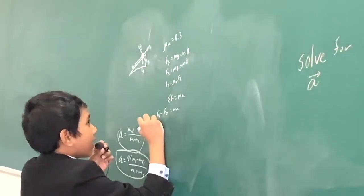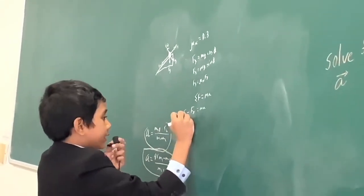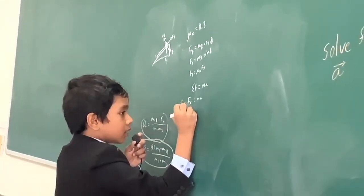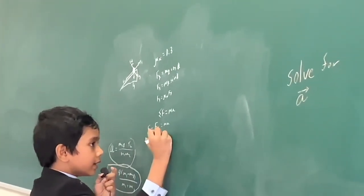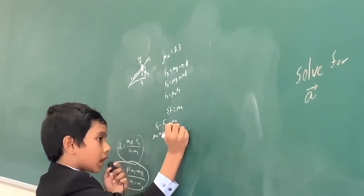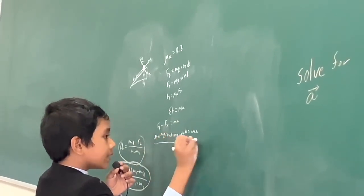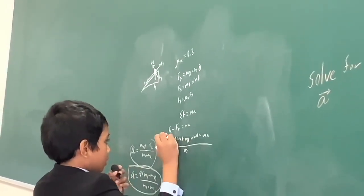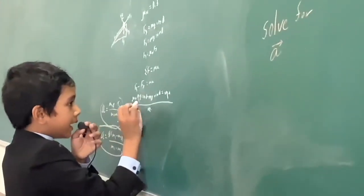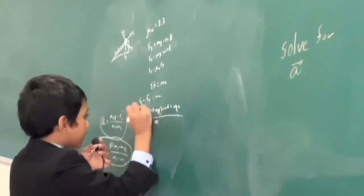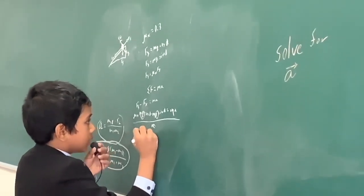Now, let's plug in. FF is mu K times FN. So, let's get that over here: mu K FN, and then we subtract that by MG sine theta. That's all equal to MA. Now, do you guys spot a common factor? That's right, it's M, the mass. We cancel out those two M's, leaving us with mu K cosine theta minus G sine theta.